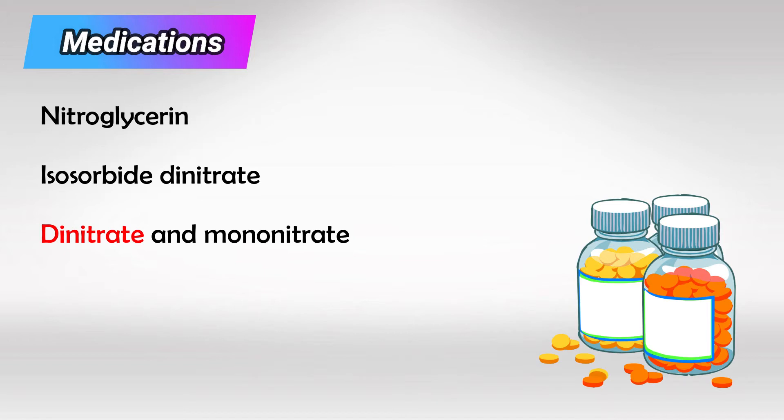Dinitrate is basically the inactive form and it has to go through the liver to be activated, while mononitrate is the active form and it has very high bioavailability.